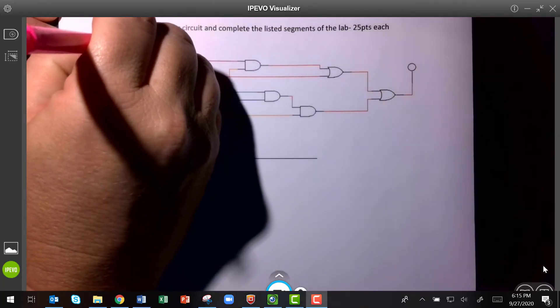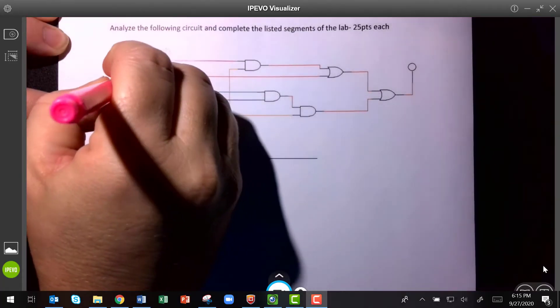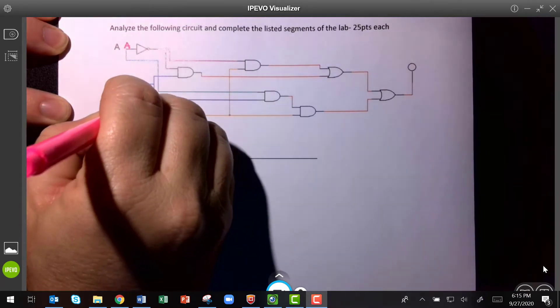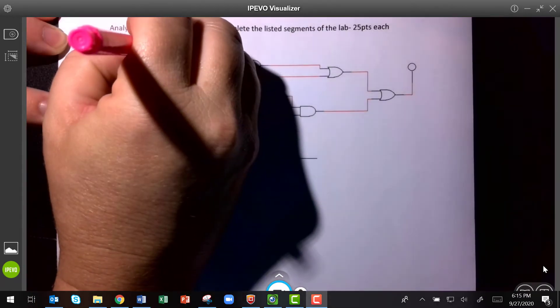Okay, so if this is A, and this is B, and this is C, I know you can already see that, so this becomes NOT A.